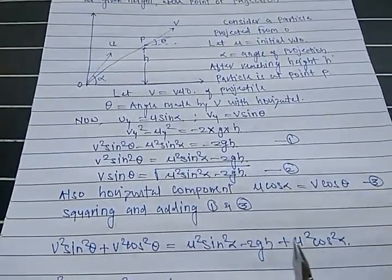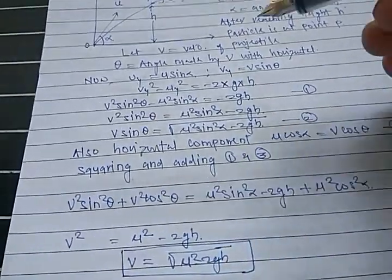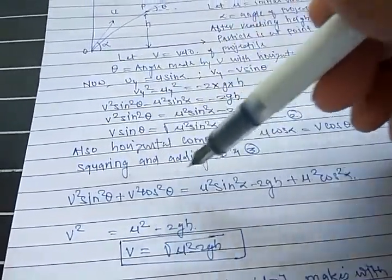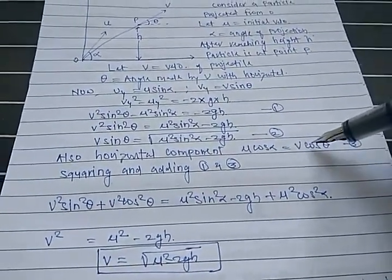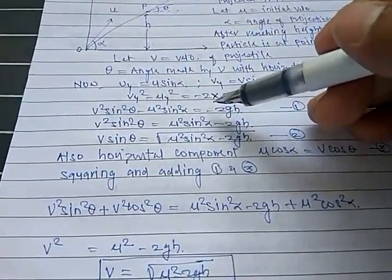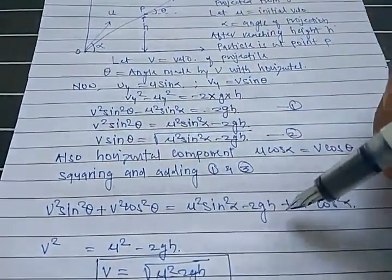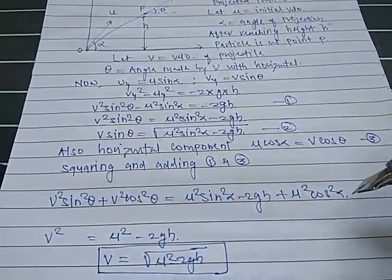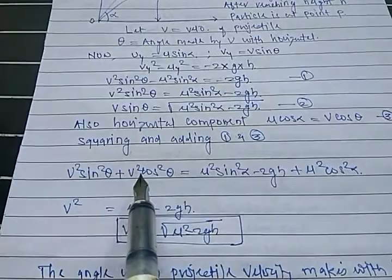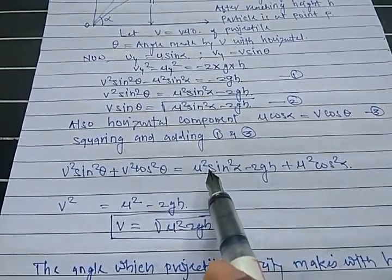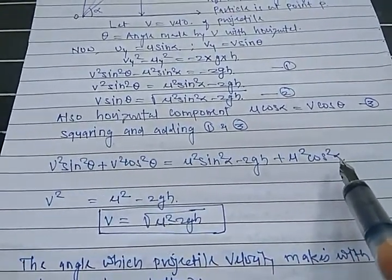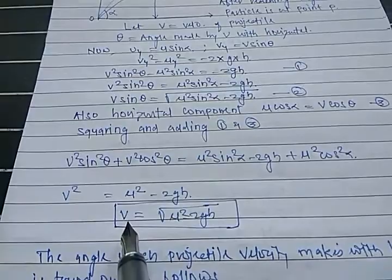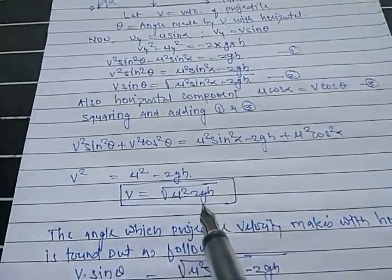Now squaring and adding equations 2 and 3: V² sin² theta + V² cos² theta = (U² sin² alpha minus 2GH) + U² cos² alpha. Since sin² theta + cos² theta = 1, we get V² = U² sin² alpha + U² cos² alpha minus 2GH = U² minus 2GH. Therefore V = square root of (U² minus 2GH).